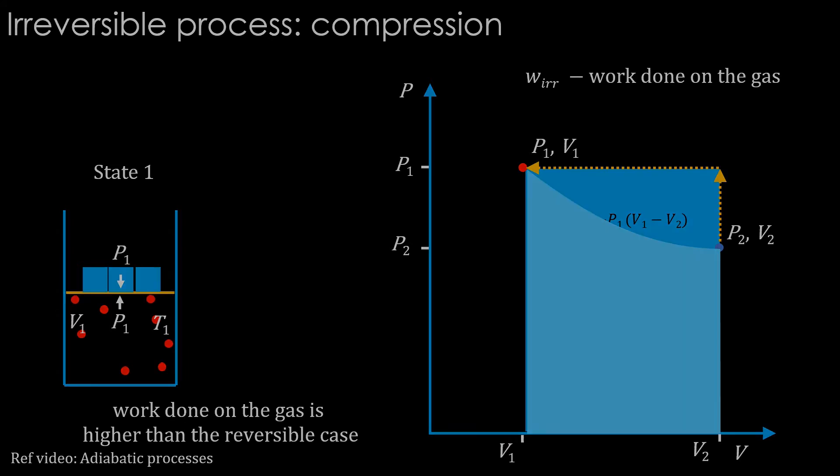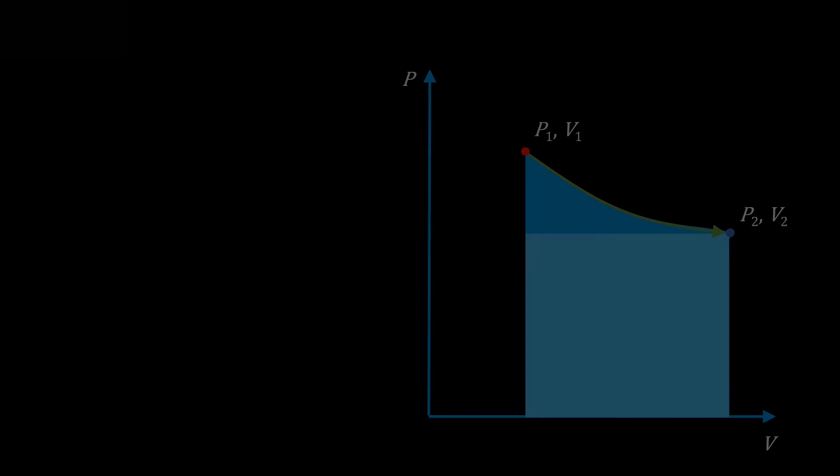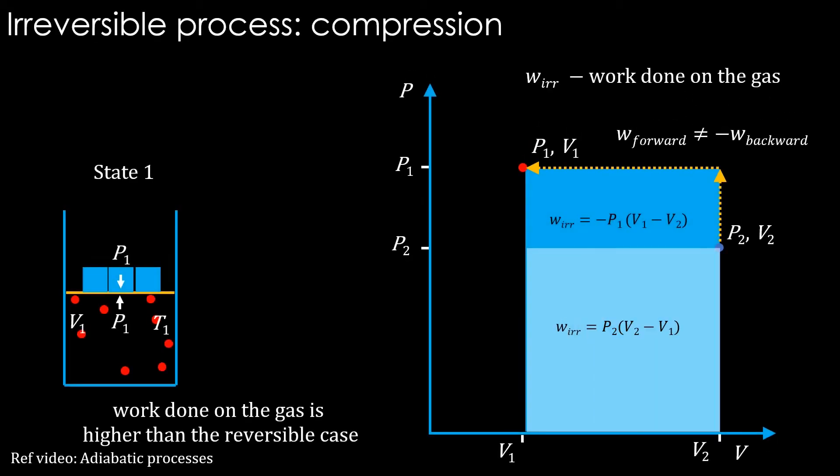When it comes to work done by the gas, we know that it is maximum in the reversible case, as we have seen in the previous video. The forward and backward work are not equal in the irreversible case. Of course, we could not follow the same path to return, as we simply reverse the process of keeping the mass back. That's how the irreversible process works.